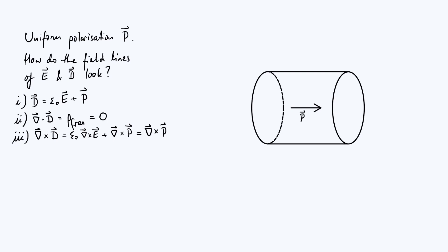Your B field lines form closed loops, and we can take that analogy even further. Equation 3 — curl D = curl P — is reminiscent of the fact that the curl of B is proportional to the current density in magnetostatics. So you're going to have closed loops of D field which circulate around curl P, in the same way that the B field circulates around the current in a solenoid.